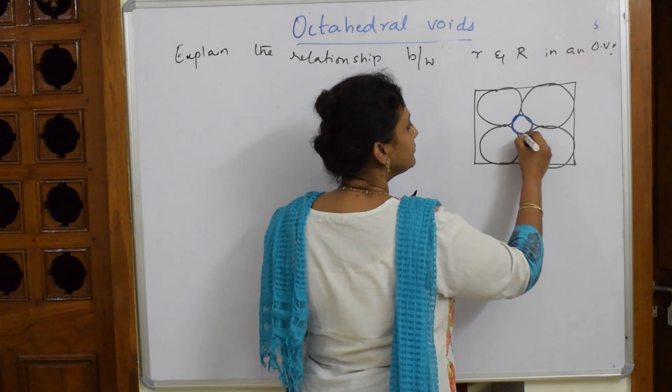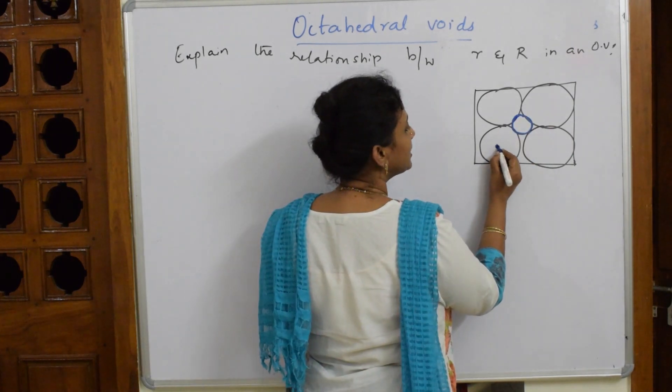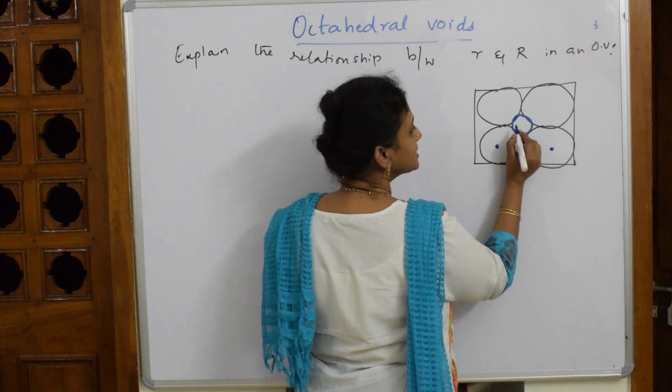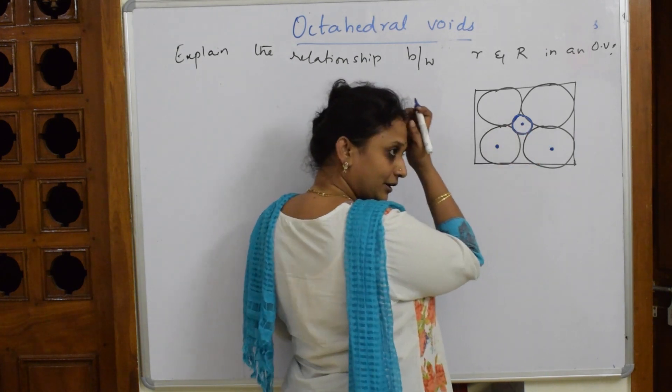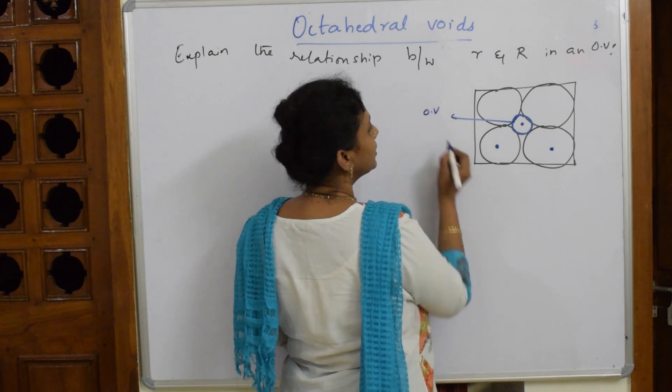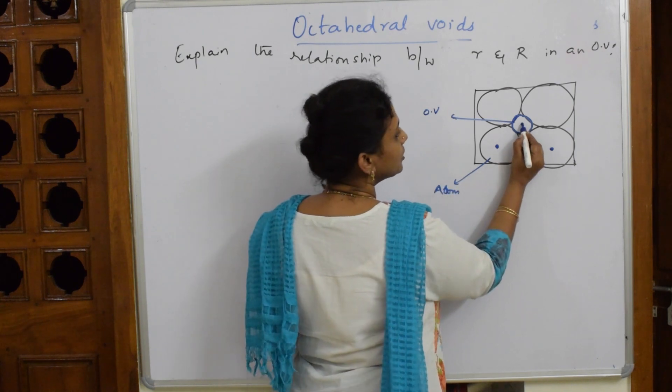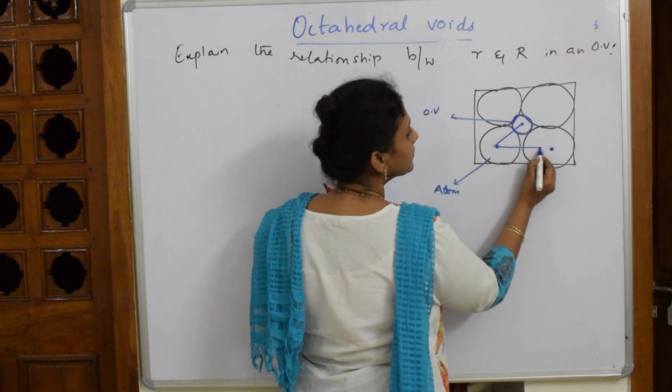On that surface of this particular thing you have an octahedral void which is created. This is one point at the center. This is your void, this is your octahedral void, this is your atom.